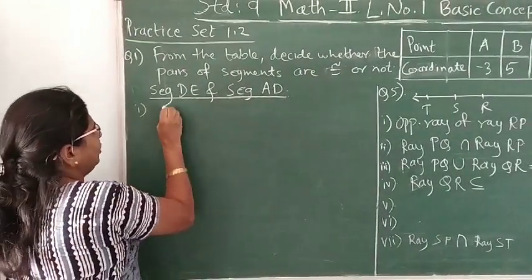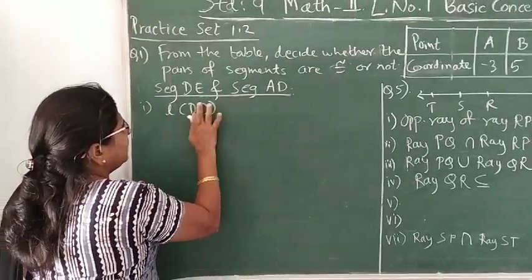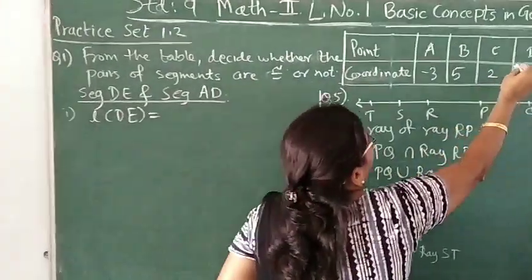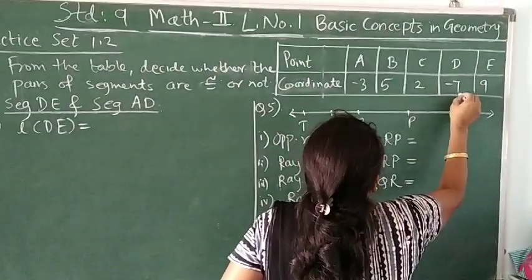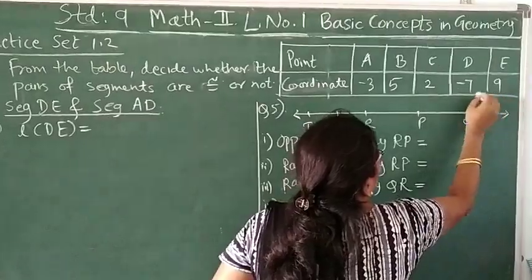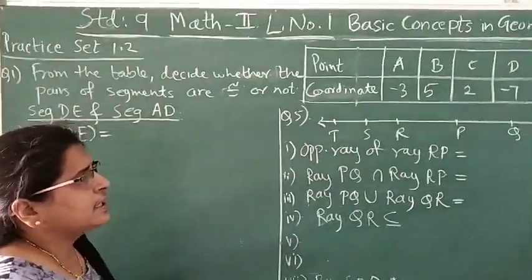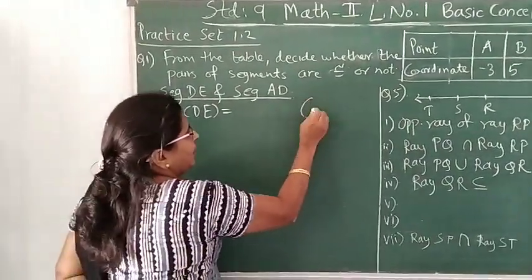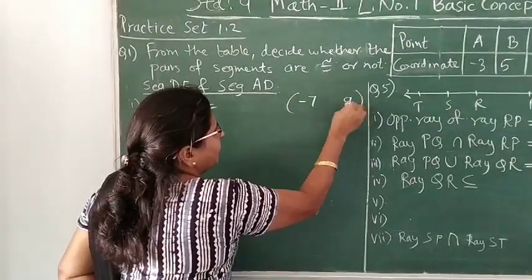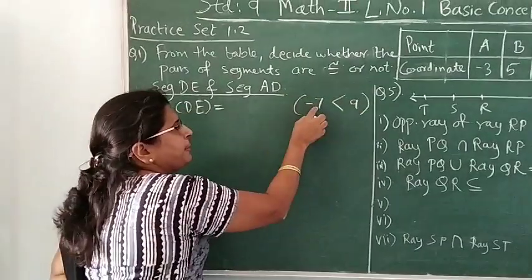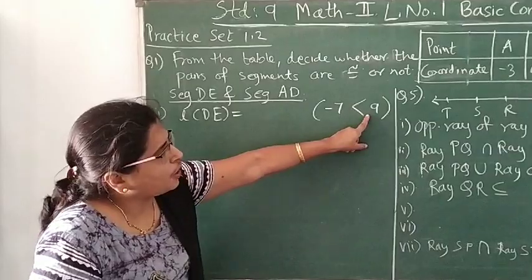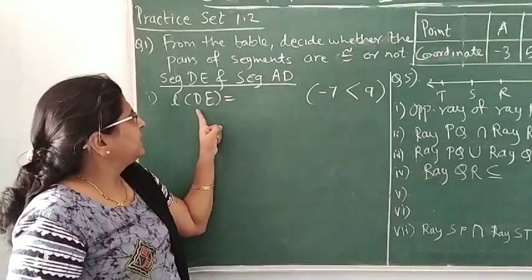So to find the length of segment DE, we will see the coordinate of D. What is the coordinate of D? It is minus 7. And what is the coordinate of E? It is 9. Now we have to compare these coordinates to see which is bigger. One is negative and one is positive, so positive 9 is bigger than minus 7.